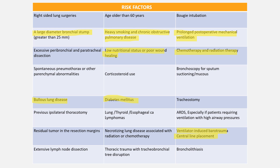Regarding the risk factors for BPF, some of the most common factors include large diameter bronchial stump, bullous lung diseases, heavy smoking and chronic obstructive pulmonary disease, low nutrition status or poor wound healing, diabetes mellitus, prolonged post-operative mechanical ventilation, chemotherapy and radiation therapy, and ventilator-induced barotrauma or central line placement.